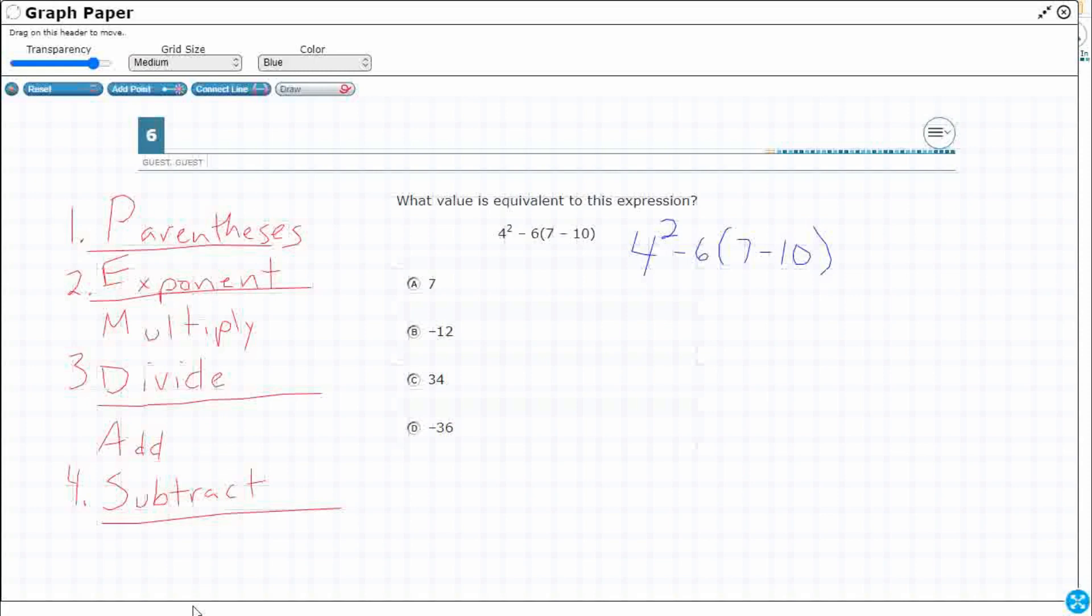So what I'm going to do is I'm going to rewrite it underneath and I'll actually change the color so you can see the change from one layer to the next. So I'm going to keep my 4 squared minus 6. You might be tempted to kind of do that 4 squared already, but we need to keep that separate. That first thing we do is going to be this seven minus ten.